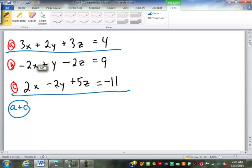2Y and negative 2Y is going to cancel out. So, if 3X and 2X makes 5X, 2Y and negative 2Y cancels out. 3Z and 5Z make 8Z. 4 and negative 11 makes negative 7. So, there is the first of my two-variable equations.